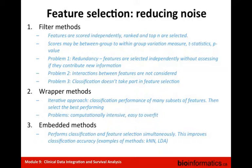Wrapper methods are an iterative approach where classification performance of many subsets of features is assessed and the best-performing subset is selected. The problem is that it's computationally intensive and very easy to overfit. Embedded methods perform classification and feature selection simultaneously, which improves classification accuracy. Methods such as KNN and LDA are actually examples of methods that do exactly that.